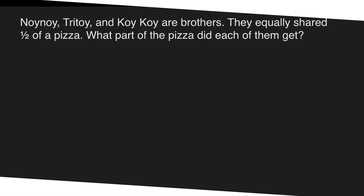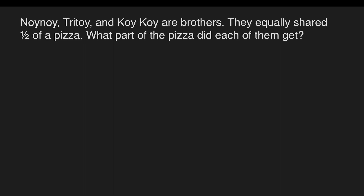So easy! Another example: Noinoy, Tritoi, and Koikoi are brothers. They equally shared one half of a pizza. What part of the pizza did each of them get? Our given: we have 1/2 and then 3 brothers. So we need to identify which is the divisor and which is the dividend.